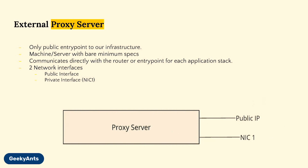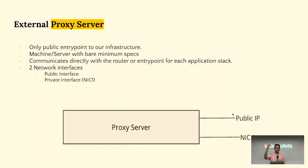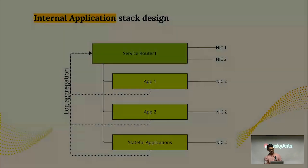The external proxy server — I'd like you to pay attention to the networking interfaces attached. The proxy server is essentially an external Nginx that talks to the internet. It should be a bare minimum server — something like a T2 micro on AWS — because it only runs Nginx. It has a public IP for internet communication and NIC card 1 to talk to the underlying application stacks.